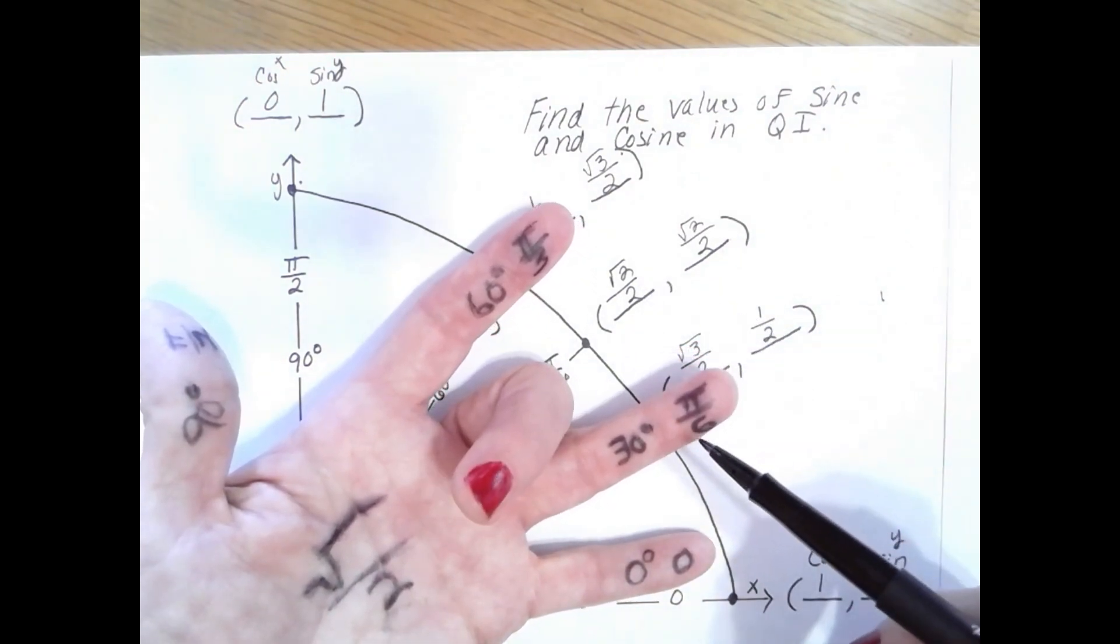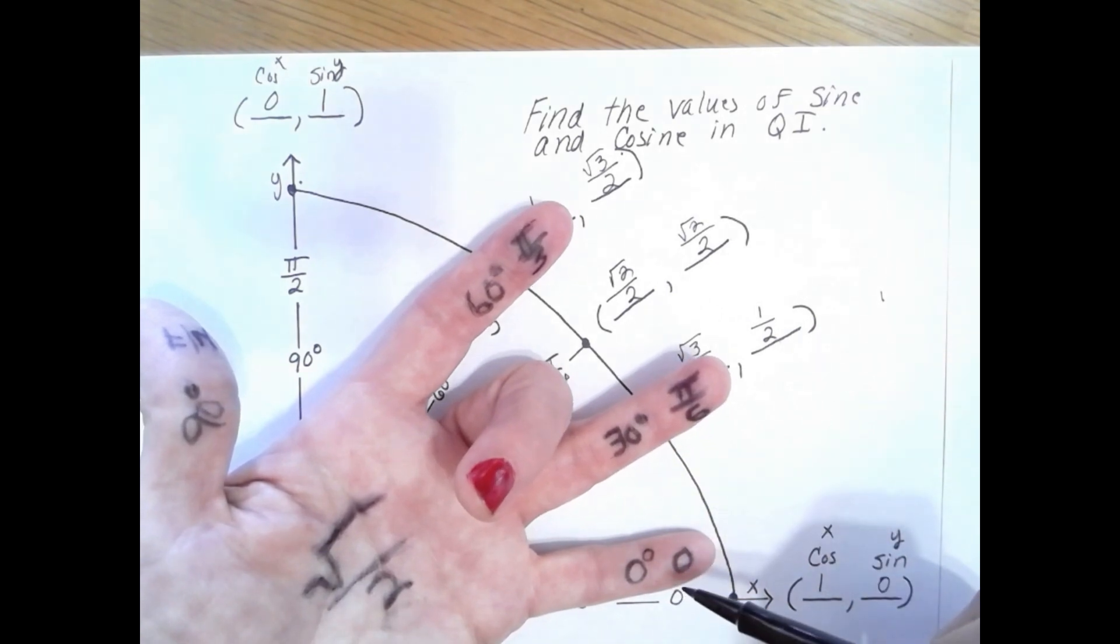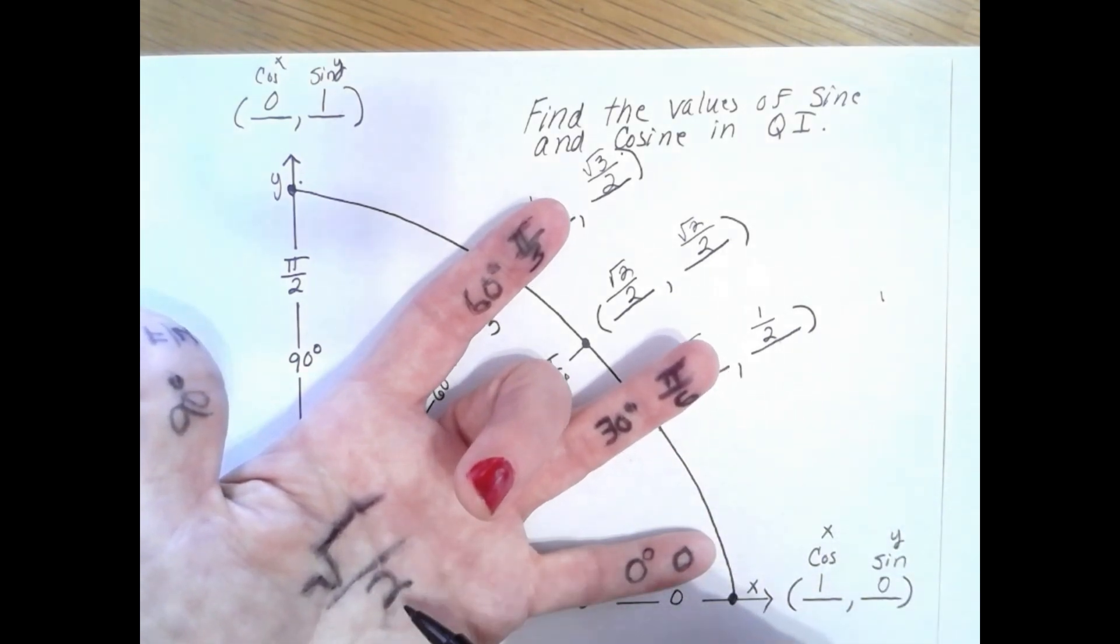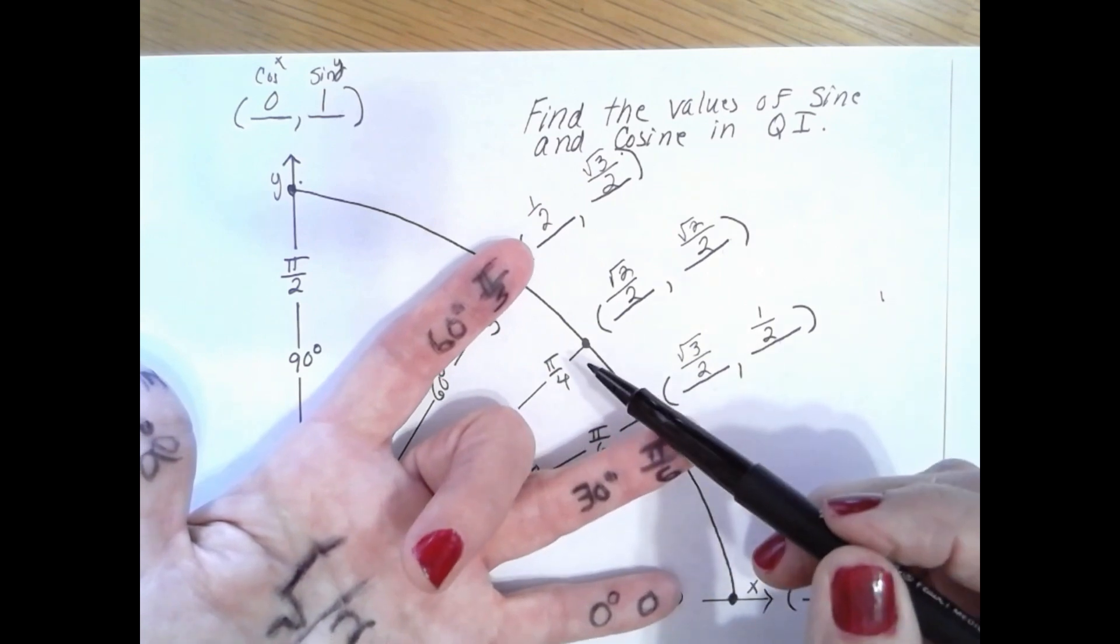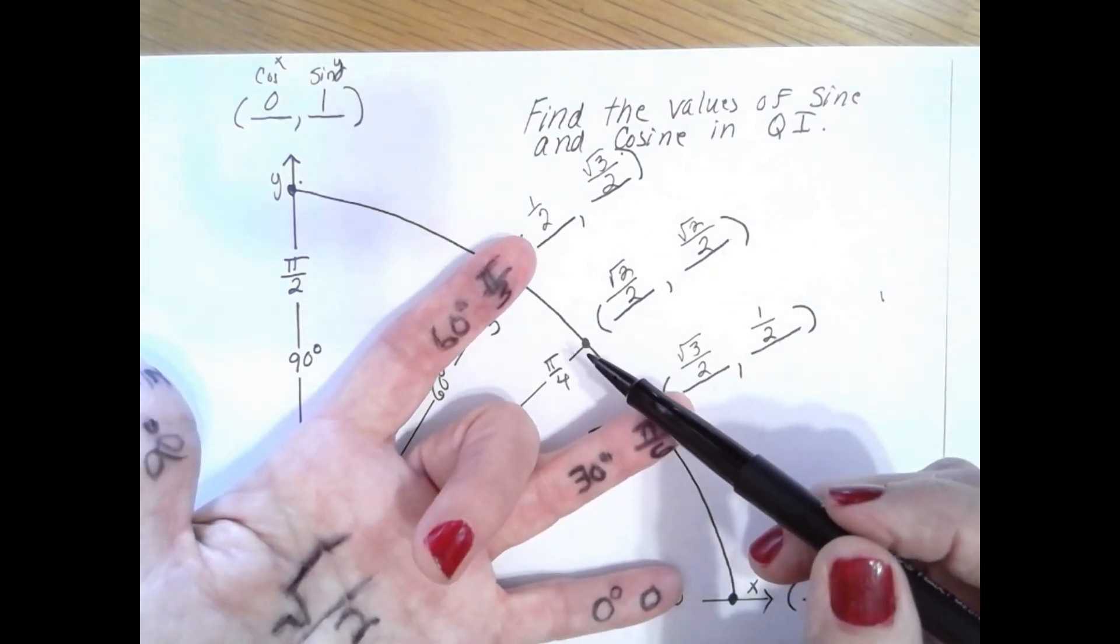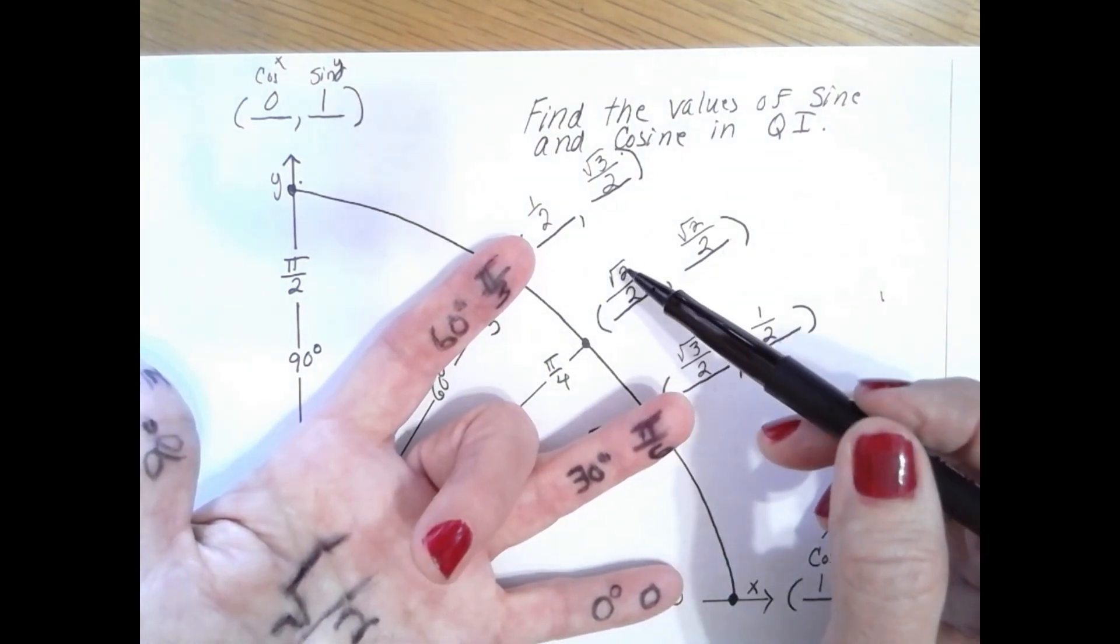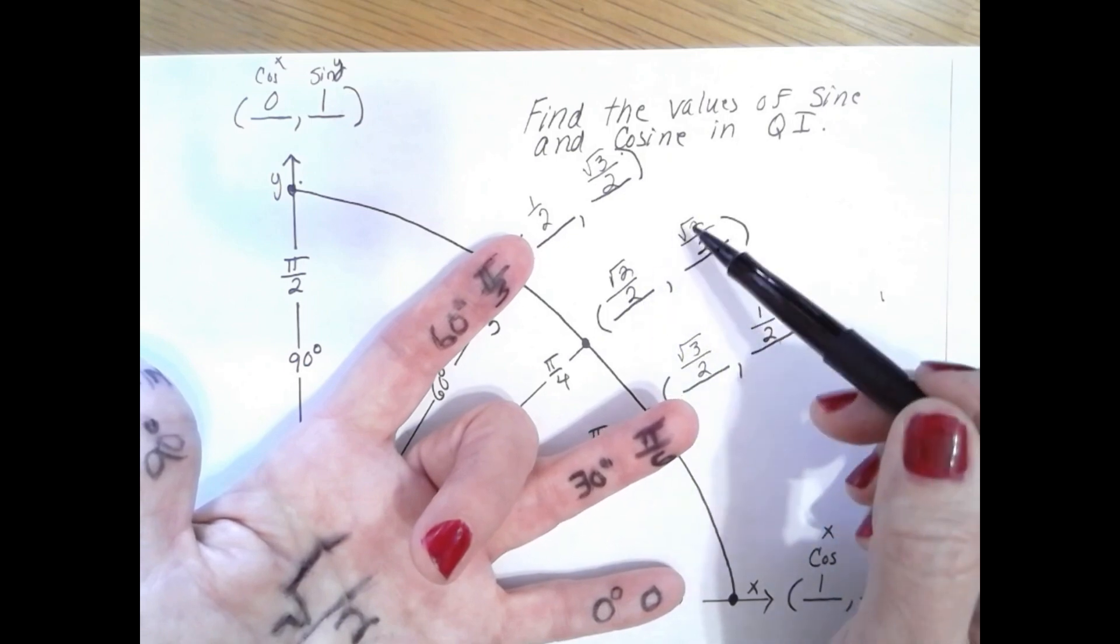On the other side, the right side, I have two fingers also so it is the square root of 2 over 2. So at 45 degrees or π over 4 radians, my values are cosine square root of 2 over 2, sine square root of 2 over 2.